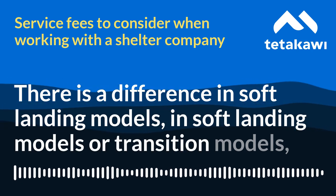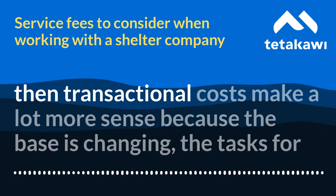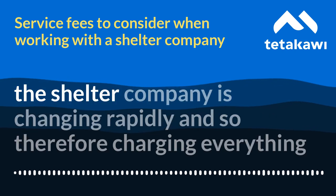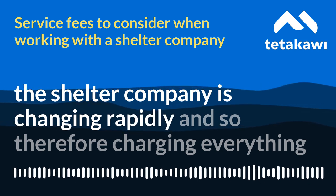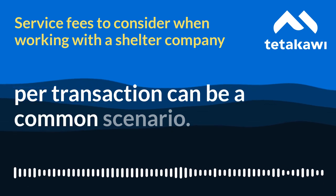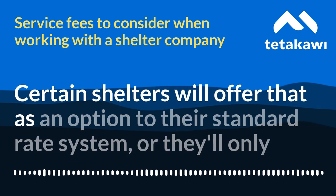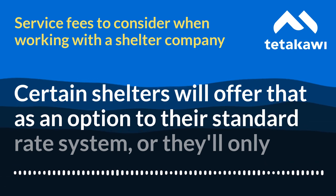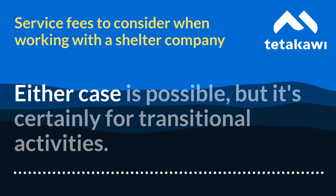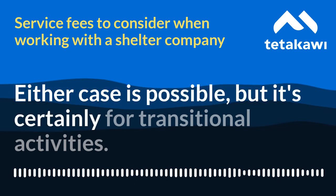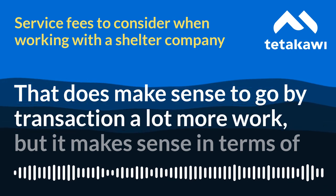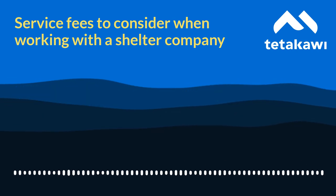There is a difference in soft landing models. In soft landing or transition models, transactional costs make a lot more sense because the base is changing and the tasks for the shelter company are changing rapidly. Charging everything per transaction is a common scenario in those cases. Certain shelters will offer that as an option to their standard rate system, or they'll only apply it in a transition. For transitional activities, it does make sense to go by transaction — a lot more work, but it makes sense in terms of the changing services.